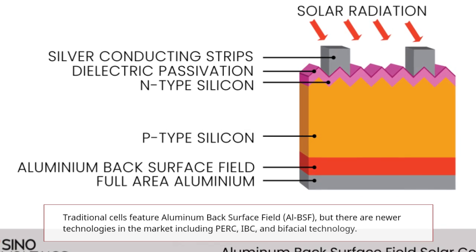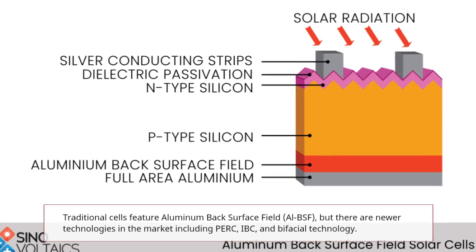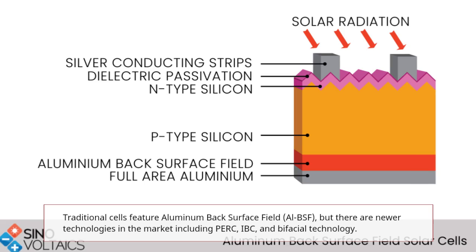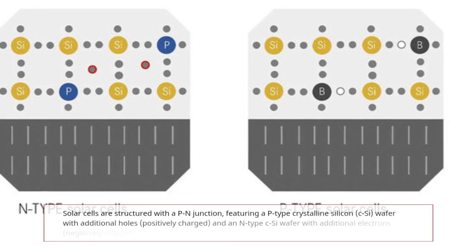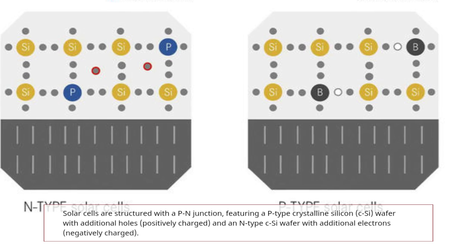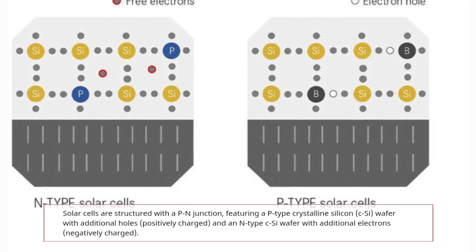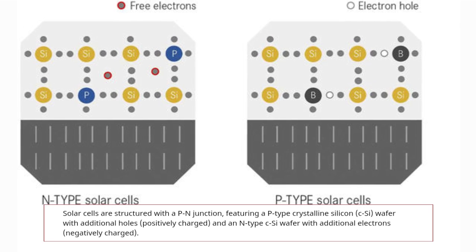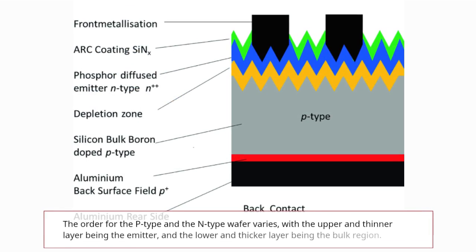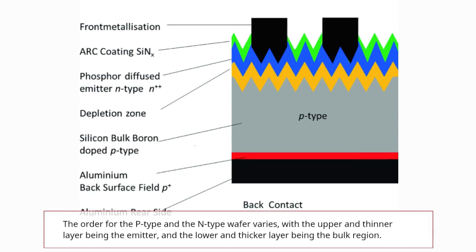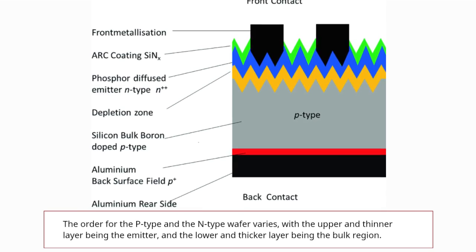Traditional cells feature an aluminum back surface field (Al-BSF), but there are newer technologies in the market including PERC, IBC, and bifacial technology. Solar cells are structured with a P-N junction, featuring a P-type crystalline silicon wafer with additional holes (positively charged) and an N-type crystalline silicon wafer with additional electrons (negatively charged). The order of the P-type and N-type wafer varies, with the upper and thinner layer being the emitter, and the lower and thicker layer being the bulk region.